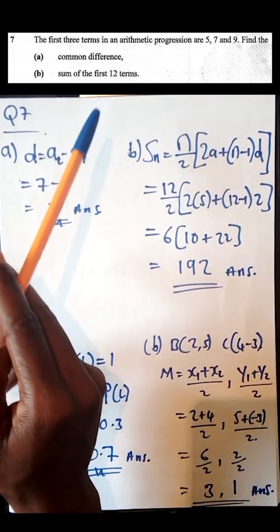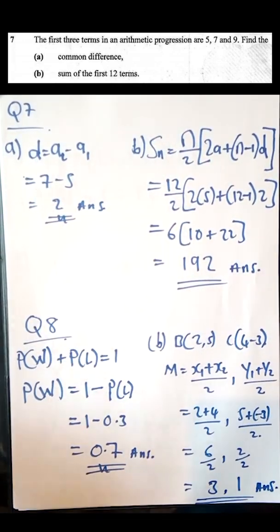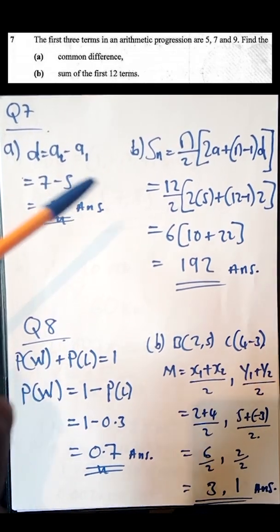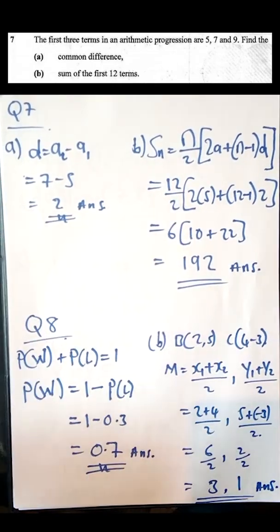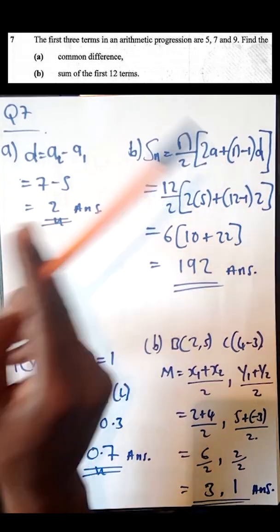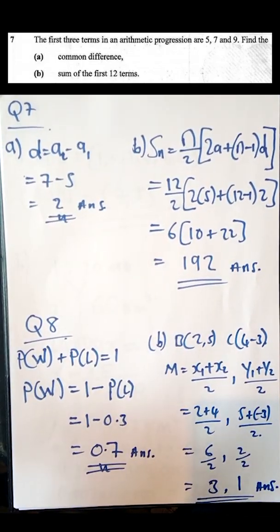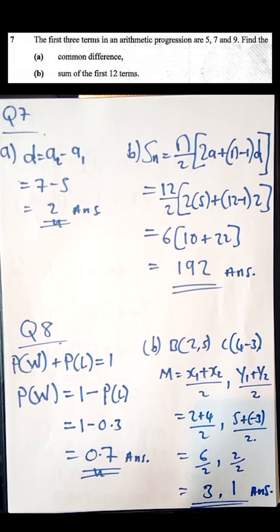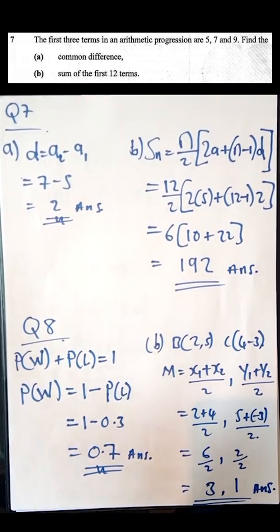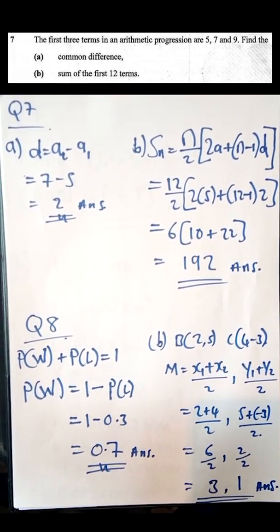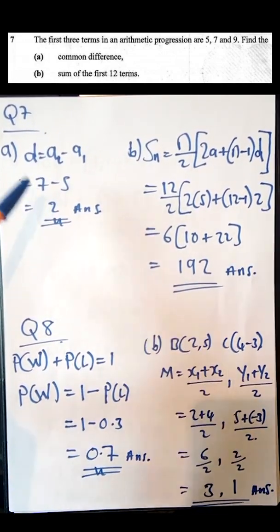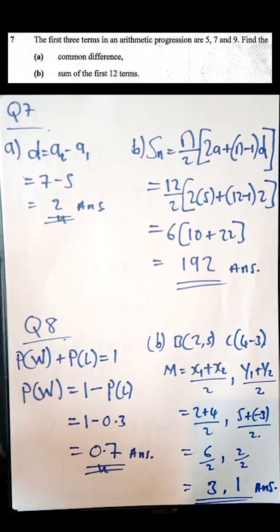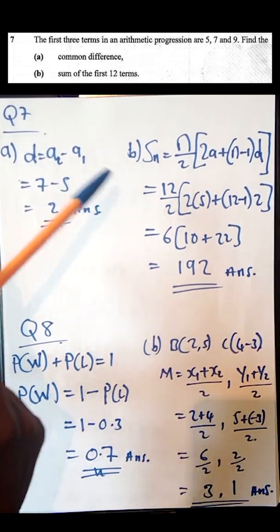In this formula, N stands for the number of terms, which is 12 as told in the question. A stands for the first term, which is five according to the sequence given. D is the common difference, which we just found to be two. From here we just compute and evaluate the expression.